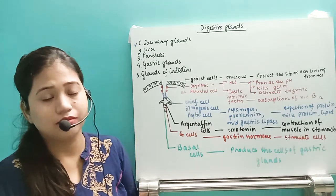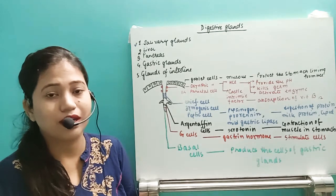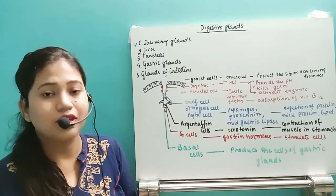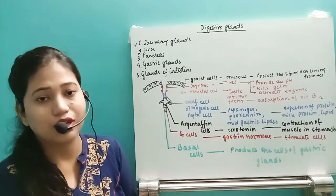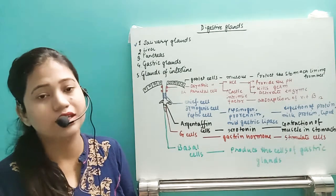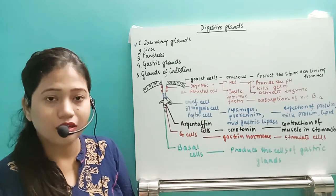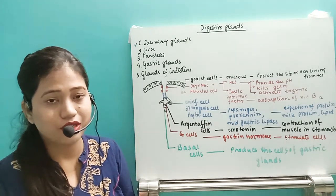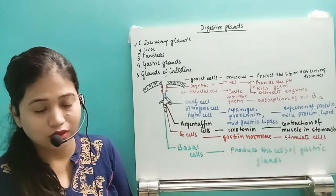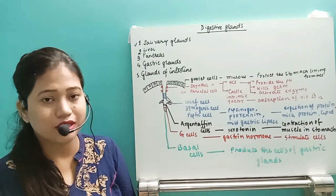The parotid gland releases the enzyme salivary amylase, also known as ptyalin, which helps in the digestion of starch. The second salivary gland is present at the junction of both jaws on either side — this is known as the submaxillary or submandibular gland. The third and smallest gland, present on the floor of the buccal cavity, is known as the sublingual gland.